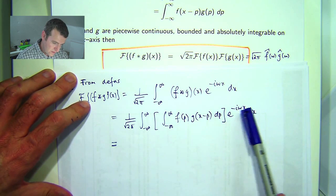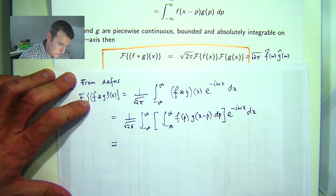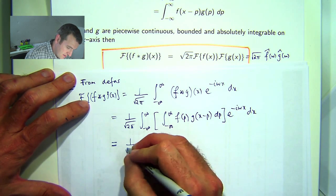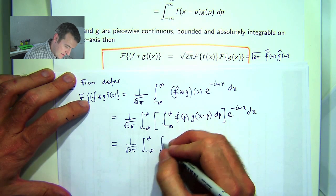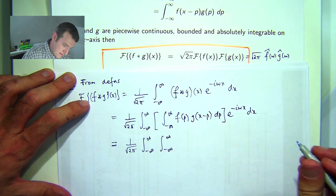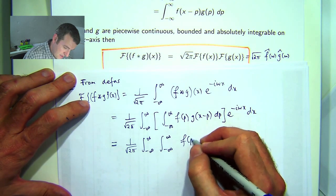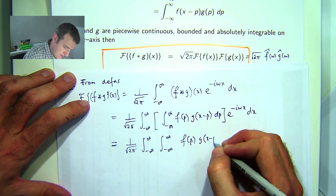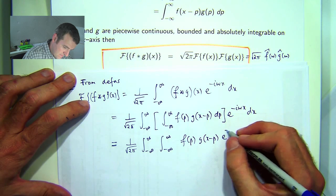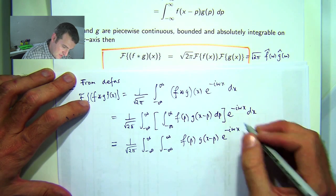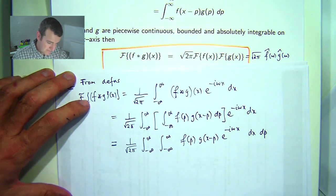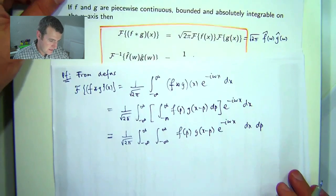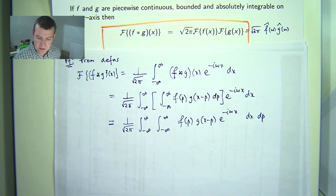Alright, so let's switch the order. So basically you can put that in there if you like and then switch the order of integration around. So instead of having dp dx, we'll have dx dp.